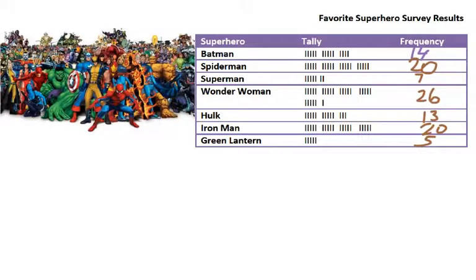So that's what a frequency table would look like. And I can look at this frequency table and I can see who had the most votes. Well, of course, Wonder Woman, she had the most. Who had the least votes? Green Lantern. I can figure out how many more votes Wonder Woman had than Green Lantern. I would simply subtract 26 minus five and I'd get 21. So Wonder Woman had 21 more votes than Green Lantern.